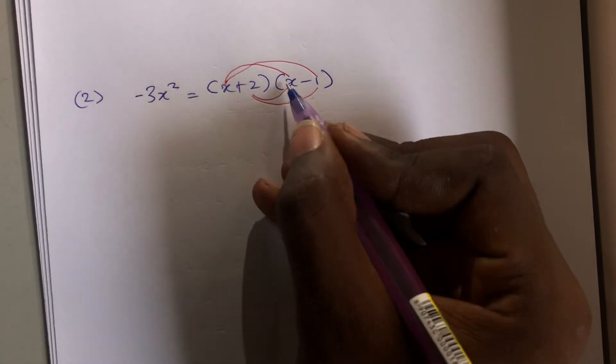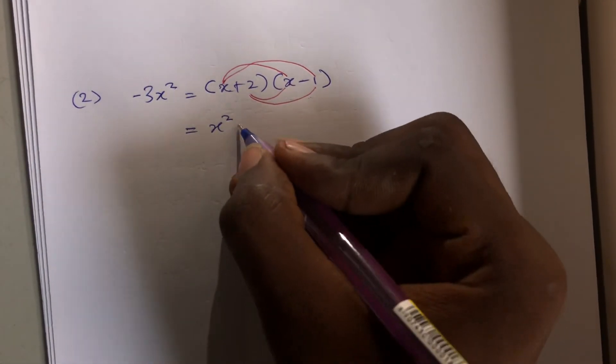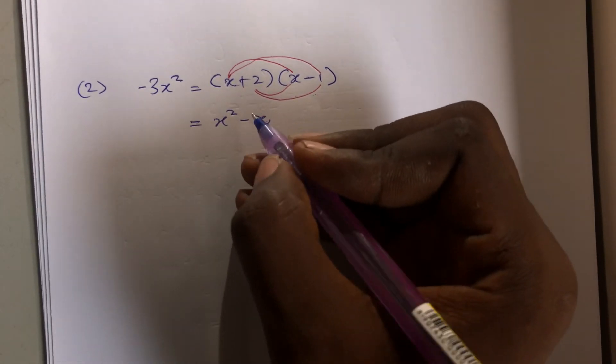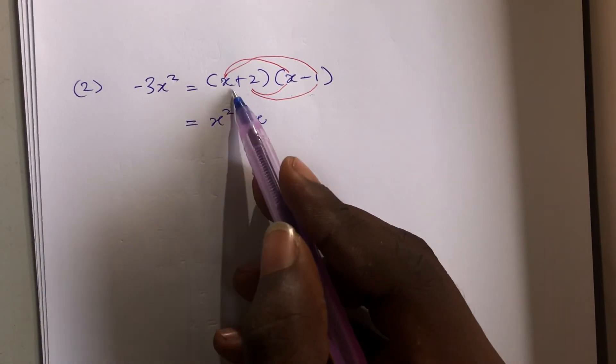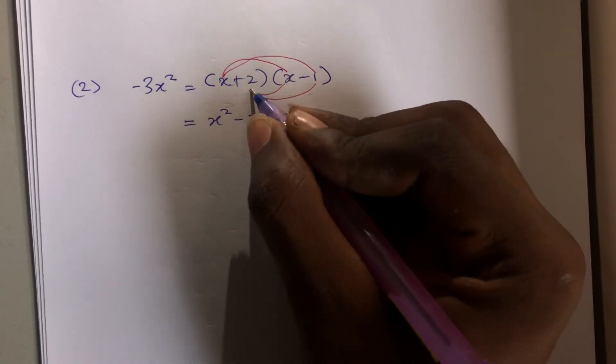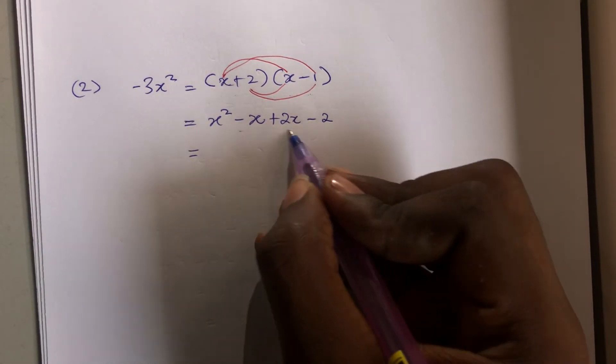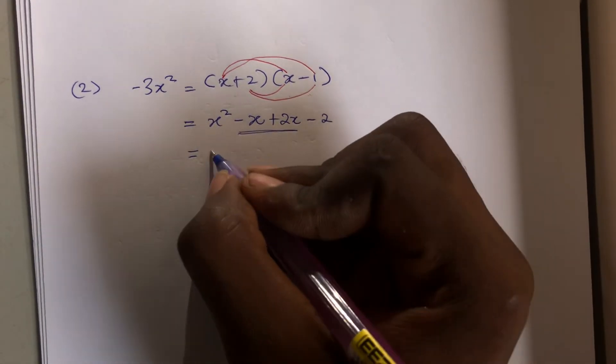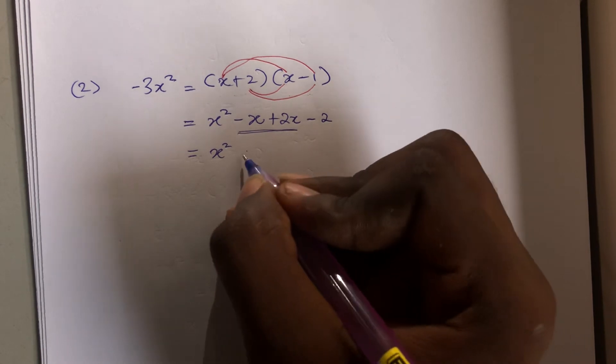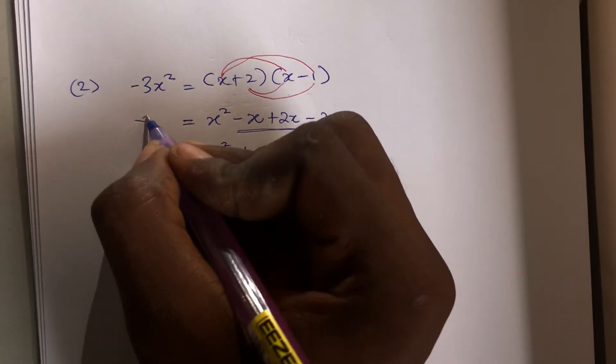So let's go with the first one: x times x is x squared, x times minus 1 is minus x. Now go to 2: 2 times x is plus 2x, 2 times minus 1 is minus 2. So minus x plus 2x is plus x. So we can add this one now.